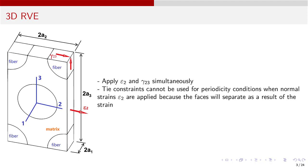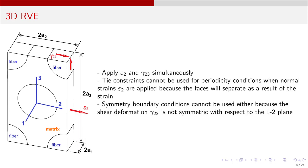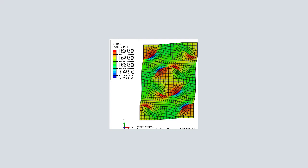Computational micromechanics requires that we apply periodicity conditions to all the sides of the RVE so that the simulation is accurate for the whole material surrounding the RVE. In previous examples we were able to satisfy periodicity by applying either symmetry boundary conditions or using tie constraints. In this example we cannot apply tie constraints because the strain epsilon 2 will stretch the RVE, in effect separating the two faces that if tied would not be able to separate from each other. Symmetry boundary conditions cannot be used either because the shear deformation applied is not symmetric — in other words, due to the applied shear the RVE will tilt to the right, invalidating any symmetry conditions. In fact, the RVE will tilt to the right and upward, so symmetry boundary conditions are out of the question.